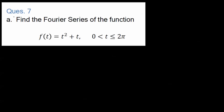We're having a look at finding the Fourier series of the function f of t equal to t squared plus 2 from 0 to 2π. We need to find a naught, aₙ, and bₙ — our Fourier coefficients. To make our life easier, we should check whether it's an odd or even function.